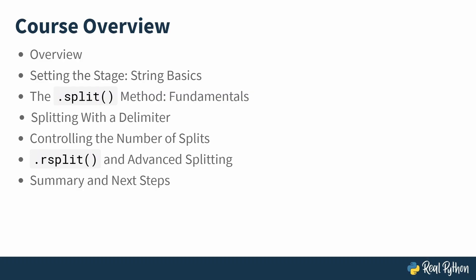Next you will focus on splitting with a delimiter. This is where you tell Python exactly what character or sequence of characters—like a comma or a tab—to use when splitting strings. Sometimes you don't want to split everywhere, so you will cover controlling the number of splits using a specific parameter to limit how many pieces you create.